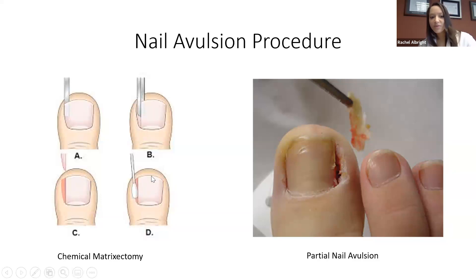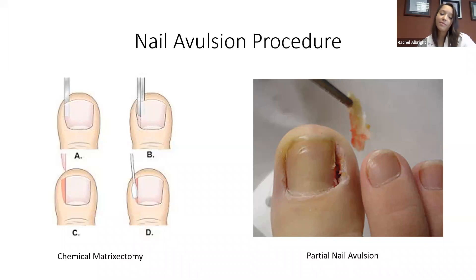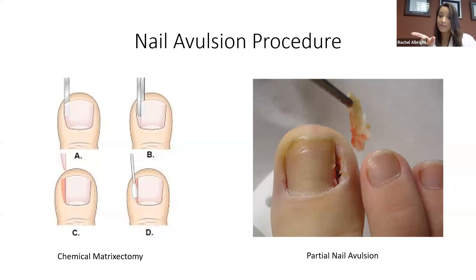For people who have this problem repeatedly, a chemical matricectomy is recommended. A small chemical is applied to the corner of the removed nail that kills the nail root — the part where the nail grows from — so that sliver of nail can never grow back. The nail will be slightly more narrow afterward, but if the procedure is done, you'll never have that ingrown problem again in that spot, which is often very worthwhile.